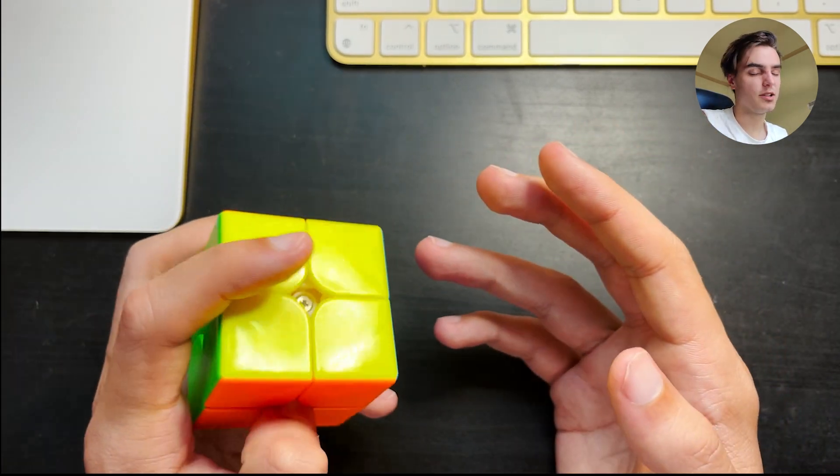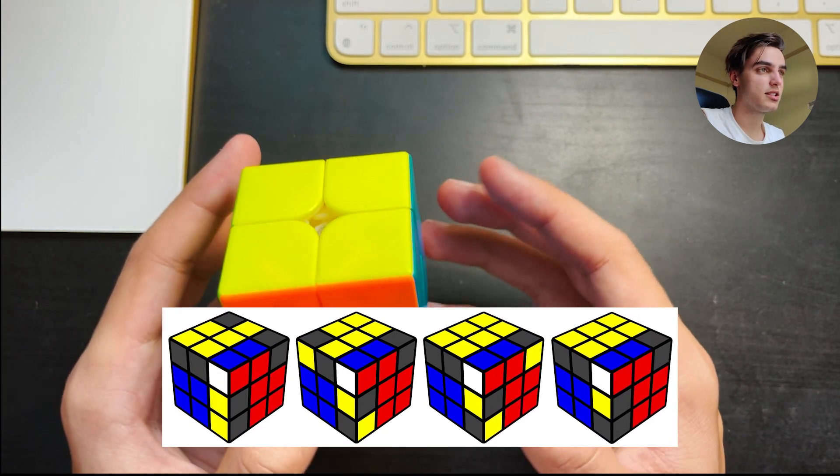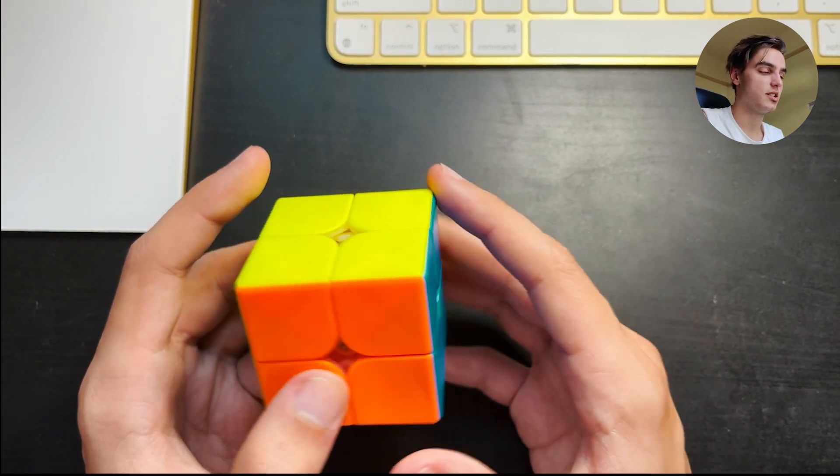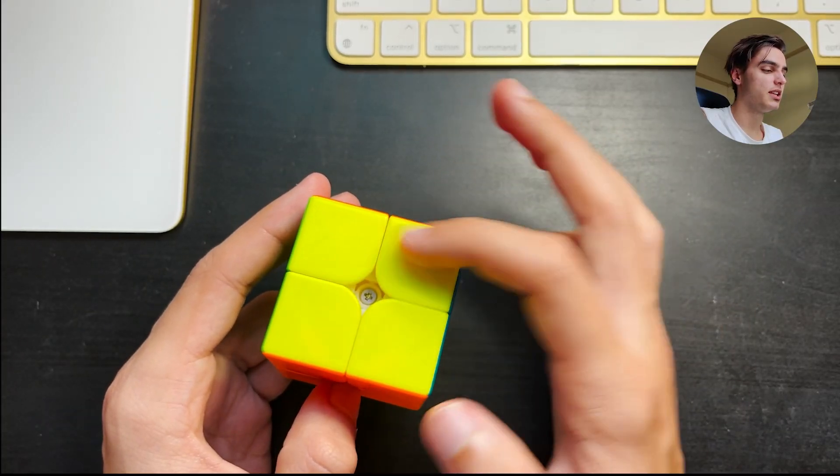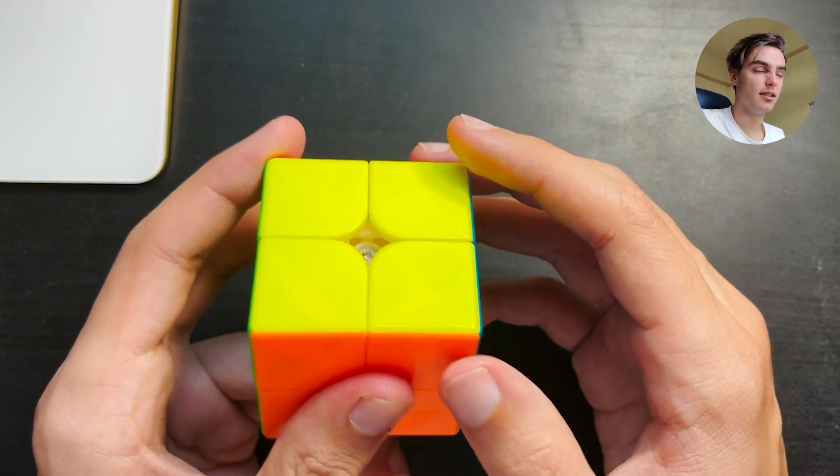Now this might seem a little bit weird because if you didn't know, winter variation is where you put the last F2L pair in in a different way than just inserting it like this while also completing the entire top yellow face. So essentially it's skipping OLL.